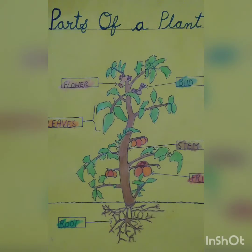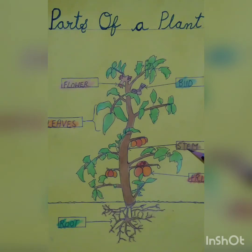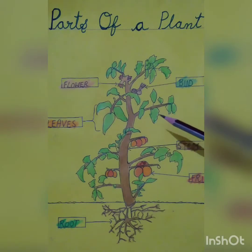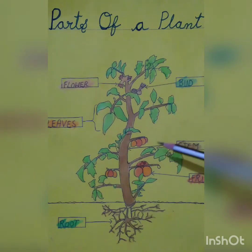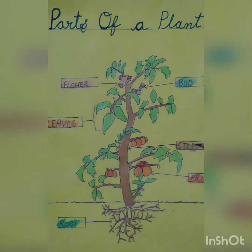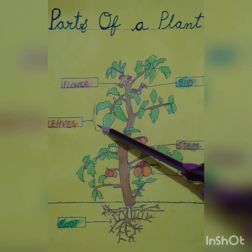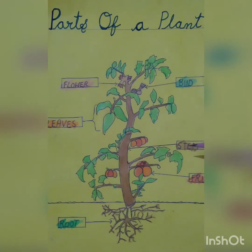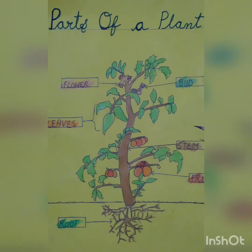If we talk about the function of a stem, the stem is a strong part of a plant. It helps to hold the plant upright and allows water and nutrition to flow up to the leaves. Some examples of stems that we eat are sugarcane and potato.